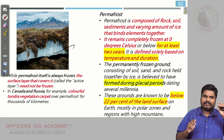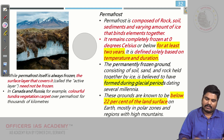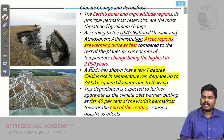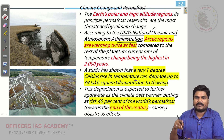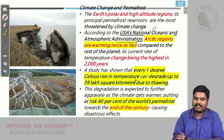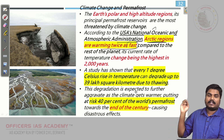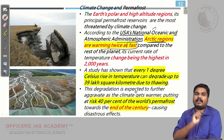The condition is: frozen at 0 degrees Celsius for a minimum of 2 years — then we call it permafrost. According to the US National Oceanic and Atmospheric Administration (NOAA), the arctic regions are warming twice as fast compared to the rest of the planet.